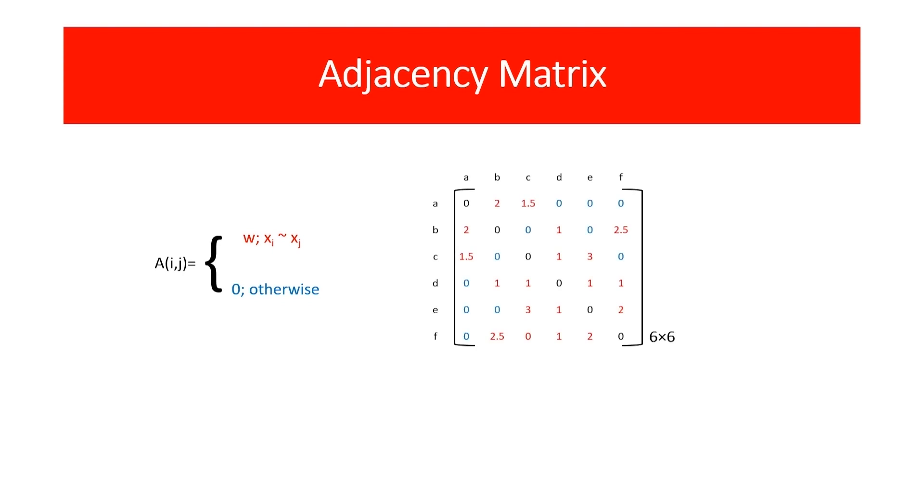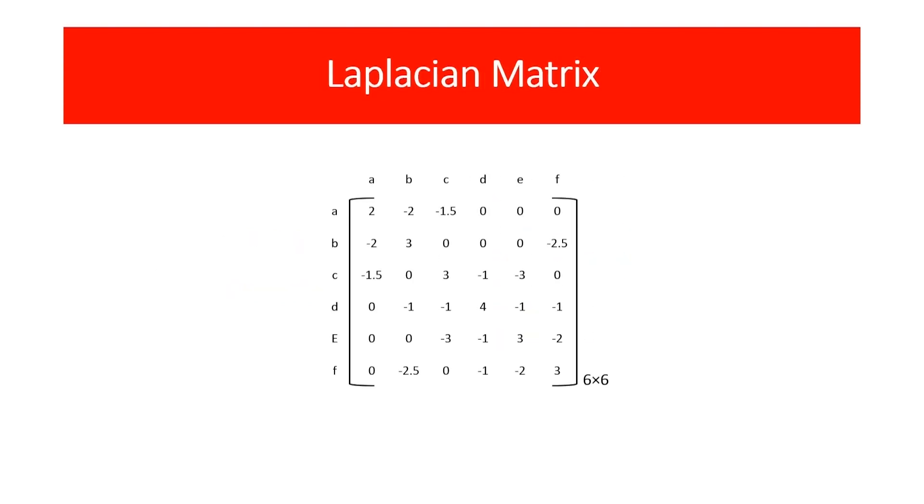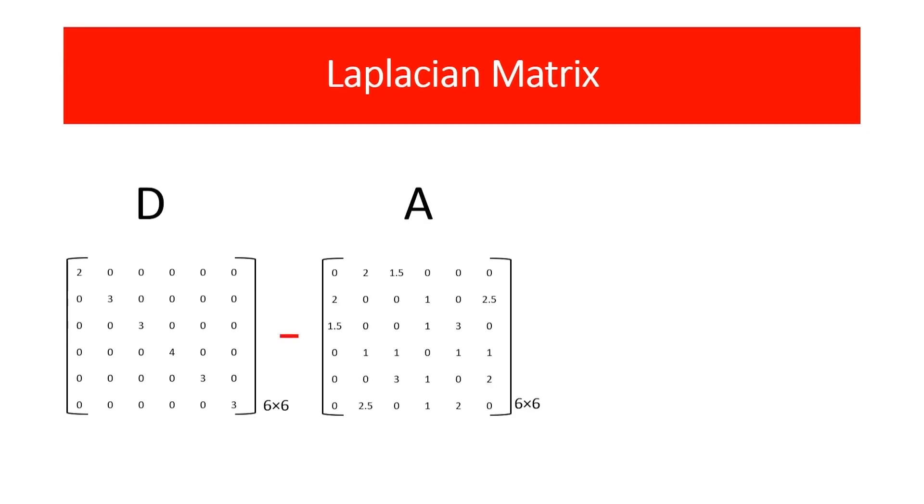We are modifying the matrices A and D to Laplacian form. It allows a natural link between discrete representations such as graphs, and continuous representations such as vector spaces. Laplacian matrix L is obtained by subtracting matrix A from matrix D. This is the obtained Laplacian matrix L.